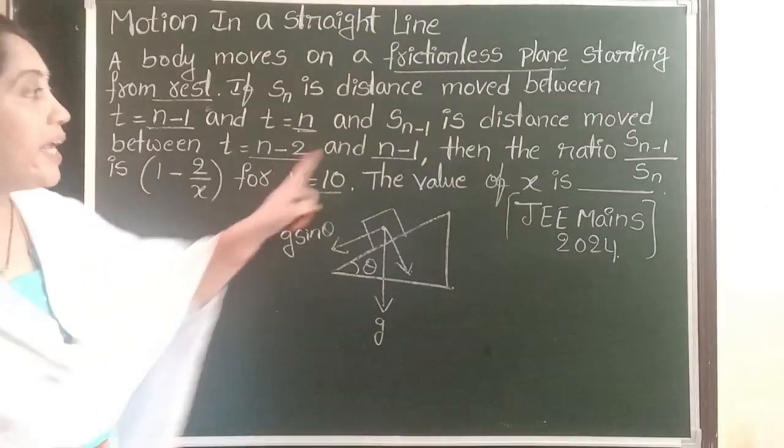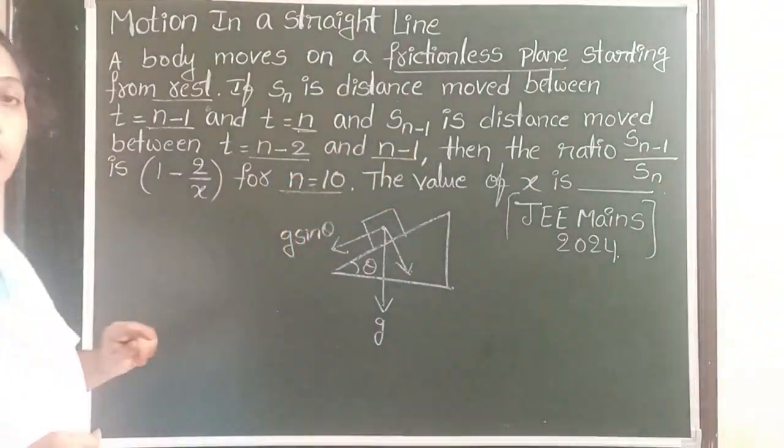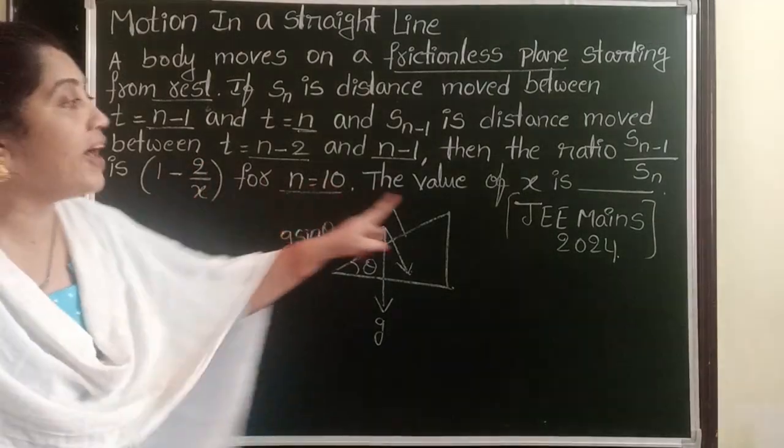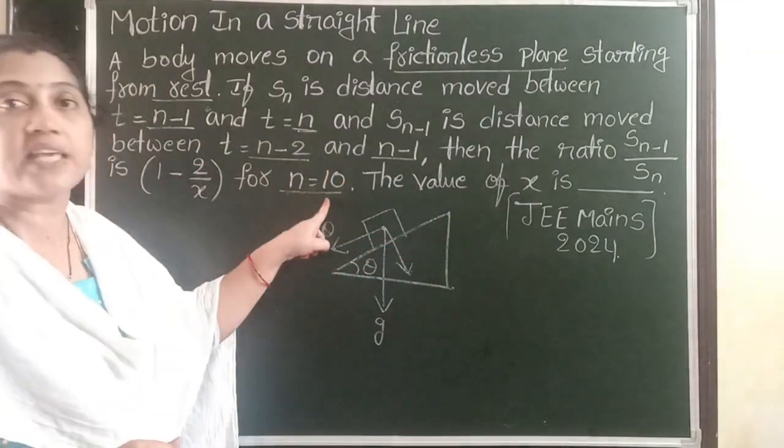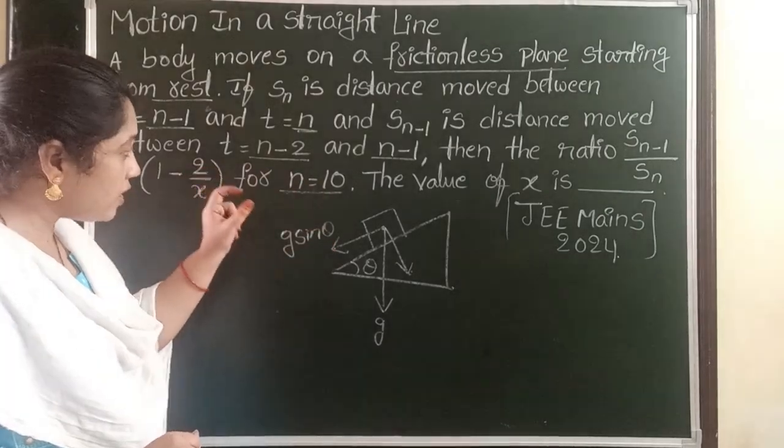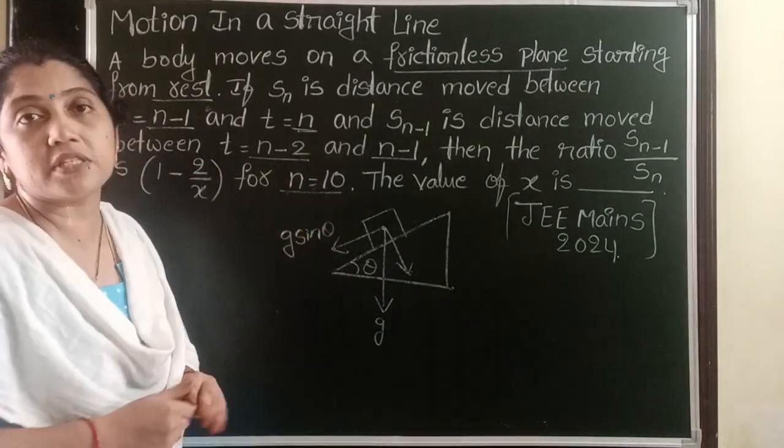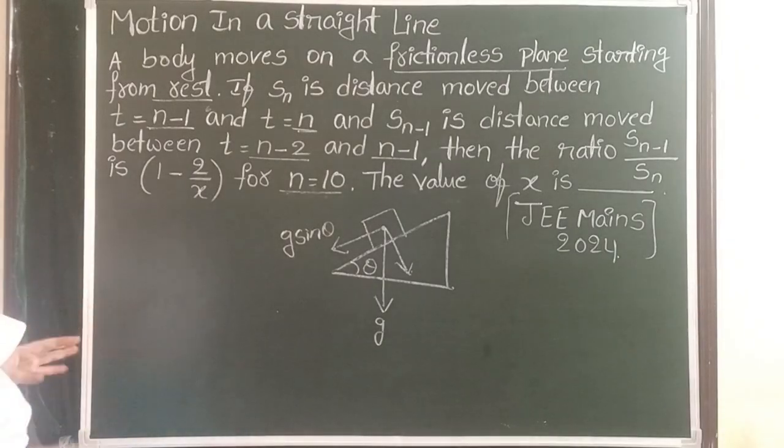Here we know ratio of Sn-1 by Sn equals 1 minus 2 by X. We have to find out the value of X when n equals 10. So because of the value of 10, this problem becomes very easy. Take the Sn equation.